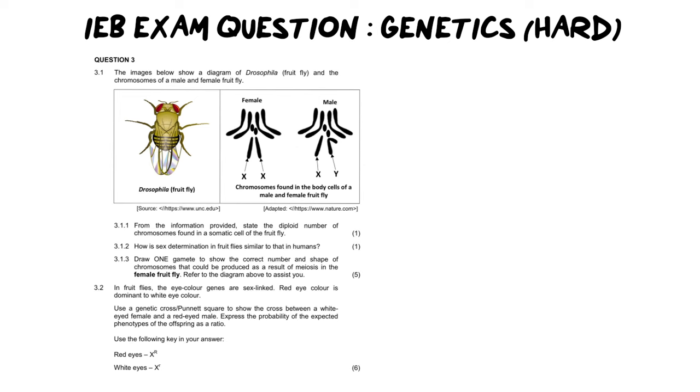So diving straight into our question. It says, the images below show a diagram of Drosophila or a fruit fly and the chromosomes of a male and a female fruit fly. So let's just quickly unpack what we're looking at here. This is a Drosophila or a fruit fly. Literally, if we've learned anything about genetics, you maybe already know that they are really important in the study in the field of genetics because they're really simple. And as you can see, they have very few chromosomes.